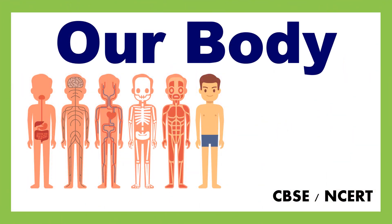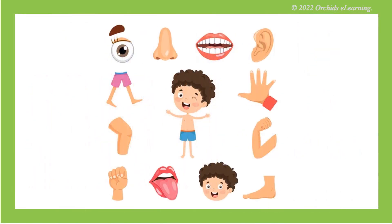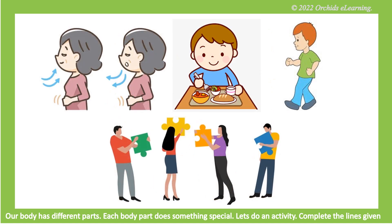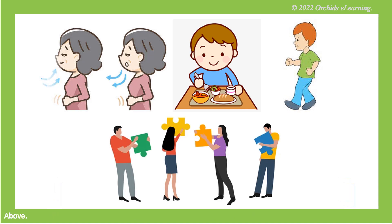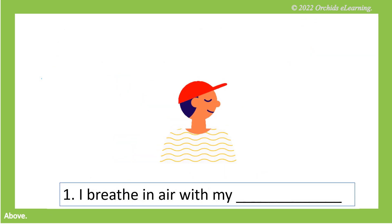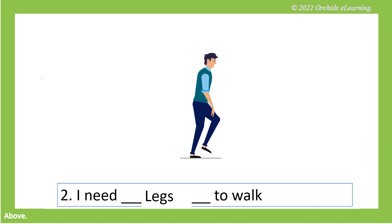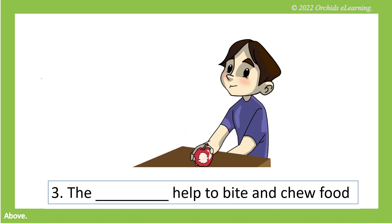Our body — Class 3 Science. Children, you all know our body has different parts. Each body part does something special. Let's do an activity: complete the lines given above. I breathe in air with my nose. I need legs to walk. The teeth help me to bite and chew food.